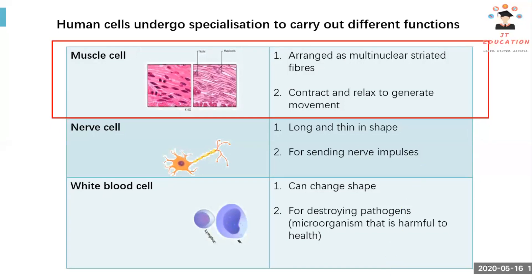The word striated means arranged closely, line by line. As we can see here, this is a muscle cell, and inside the muscle cell we have a very dense dark area which is the nucleus — so it is multinuclear. The striated fibers are closely arranged layer by layer on top of each other.